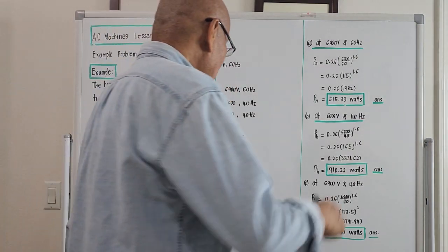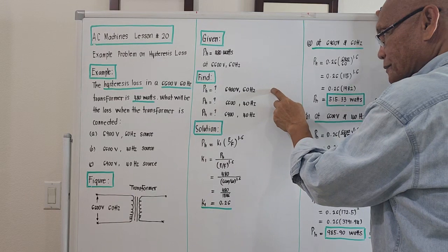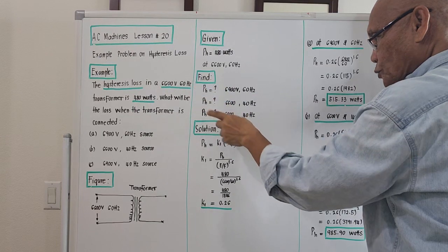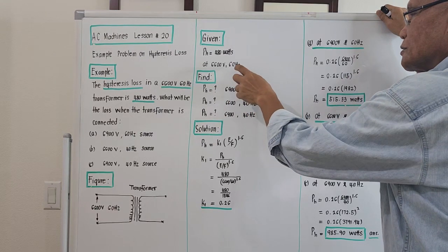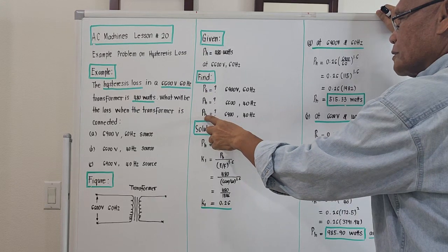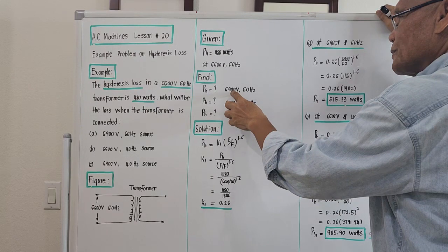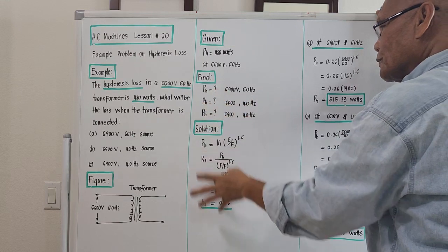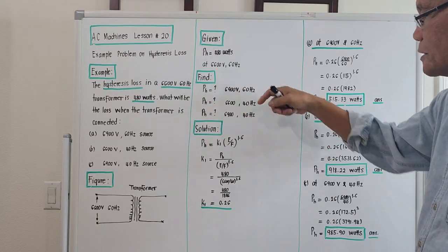The problem is asking: what will be Ph at 6900 volts and 60 Hz — slightly higher voltage than the original, same frequency. Next, hysteresis loss when the voltage is the same 6600 but instead of 60 Hz, this is 40 Hz. Thirdly, hysteresis loss when the voltage is 6900 and the frequency is 40 Hz. So we have to compute three variations of hysteresis loss at different voltages and frequencies.